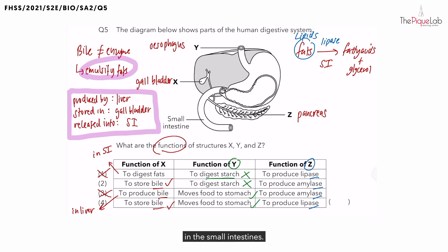starch and protein can still be digested in the small intestines. The pancreas can still produce the same type of enzymes that the mouth and stomach produce. So it can produce amylase to digest starch. It can also produce protease to digest protein.